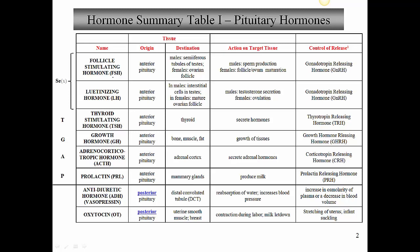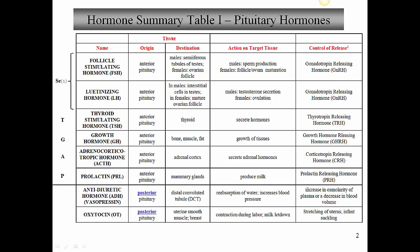In the first column, I've given you the name of the hormone plus the abbreviation, which you should know. I've also given you the origin in terms of where it comes from, as well as the destination - the target tissue. In the third column, it details the action on the target tissue. And in the last column, there's the control of release. Remember that all the hormones of the anterior pituitary need a releasing hormone in order to be released, so you'll see all the individual releasing hormones detailed here. The posterior pituitary hormones do not need releasing hormones - there are other factors that stimulate their release.